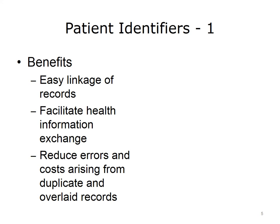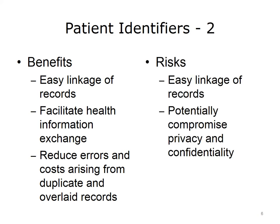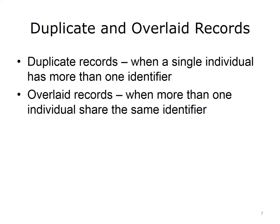There are both benefits and risks for patient identifiers. The most important benefit is the easy linkage of records. The ability to connect records from different episodes of care and across different organizations facilitates tasks such as health information exchange. Patient identifiers also reduce errors and costs that arise from duplicate and overlaid records. However, that same easy linkage of records potentially compromises privacy and confidentiality. Duplicate records are when more than one record exists for a patient, whereas overlaid records are when more than one patient is mapped into the same record.